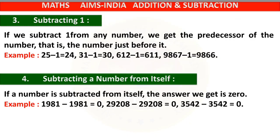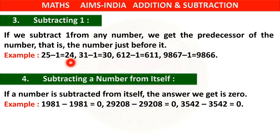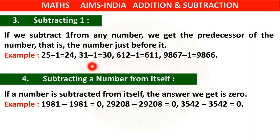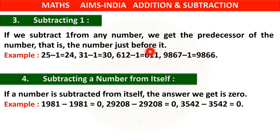Examples: 25 minus 1 equals 24. When we write the numbers: 23, 24, 25 — 24 comes just before 25, so 24 is the predecessor. The predecessor is the number that comes just before a given number, and we find it by subtracting 1. 31 minus 1 equals 30, 612 minus 1 equals 611, and 9,867 minus 1 equals 9,866. These differences are the predecessors of the original numbers.